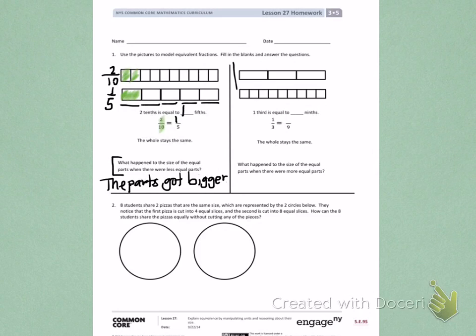Try the second part over here on your own, comparing one third and how many ninths it takes to equal the same as one third. Make sure to answer the question down below about what's happening to the size of the parts.